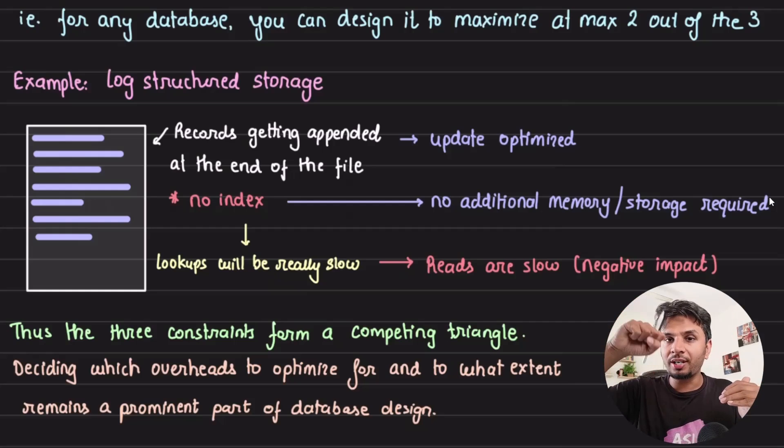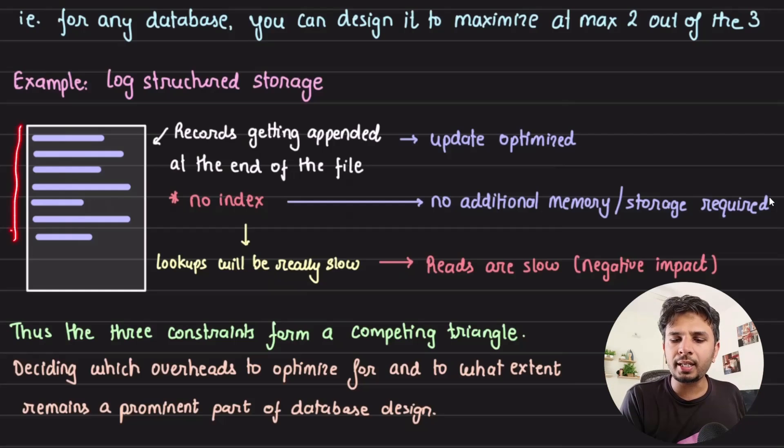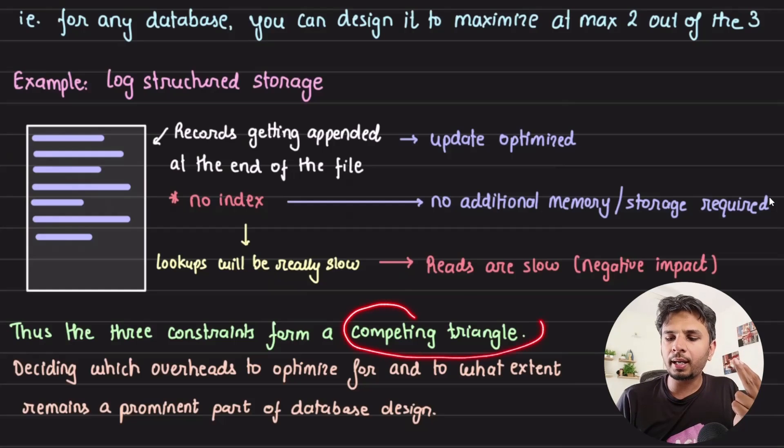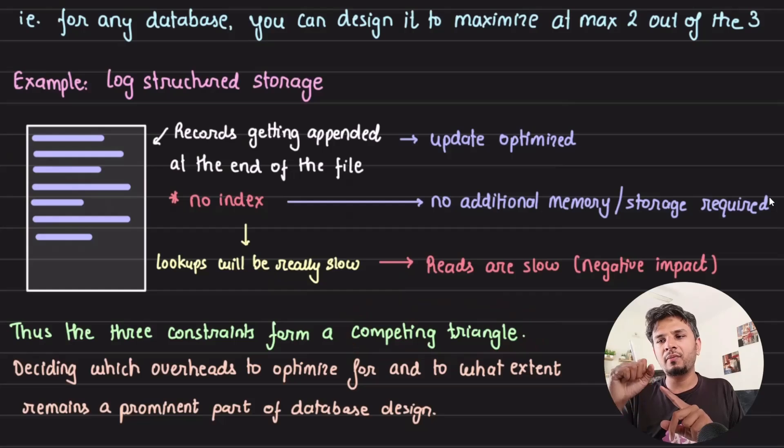As soon as we optimize on writes and memory, if I'm looking for a particular key, I would have to go through the entire file, each record one after another. When I'm optimizing for updates and memory, I'm giving up on read cost. In no way could we get all three. The read, update, and memory form a competing triangle in which one has to be given up in order to maximize the other two.